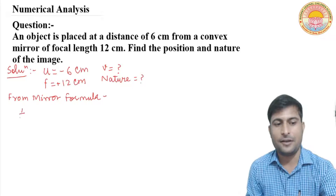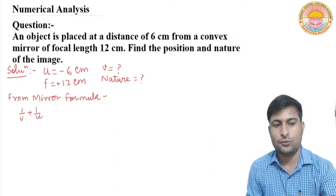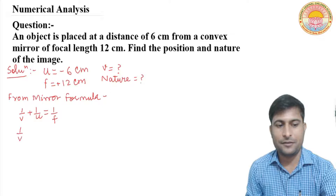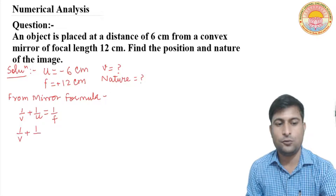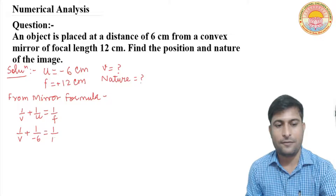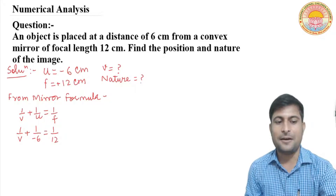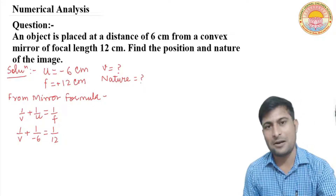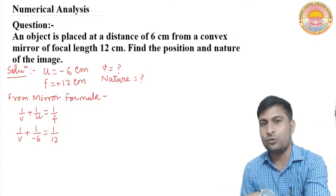From the mirror formula — 1 upon v plus 1 upon u equals 1 upon f. So, 1 upon v plus 1 upon (minus 6) equals 1 upon 12. Transposing 1 upon minus 6 to the right side, it becomes plus.